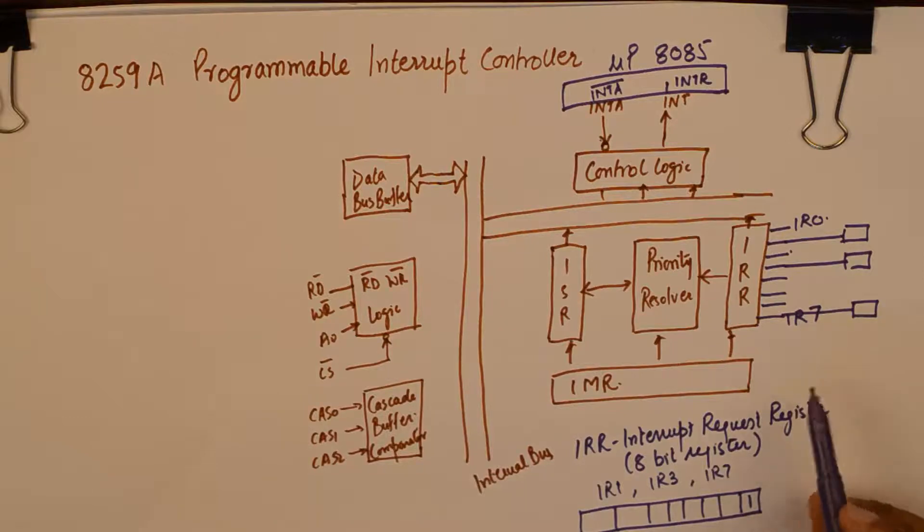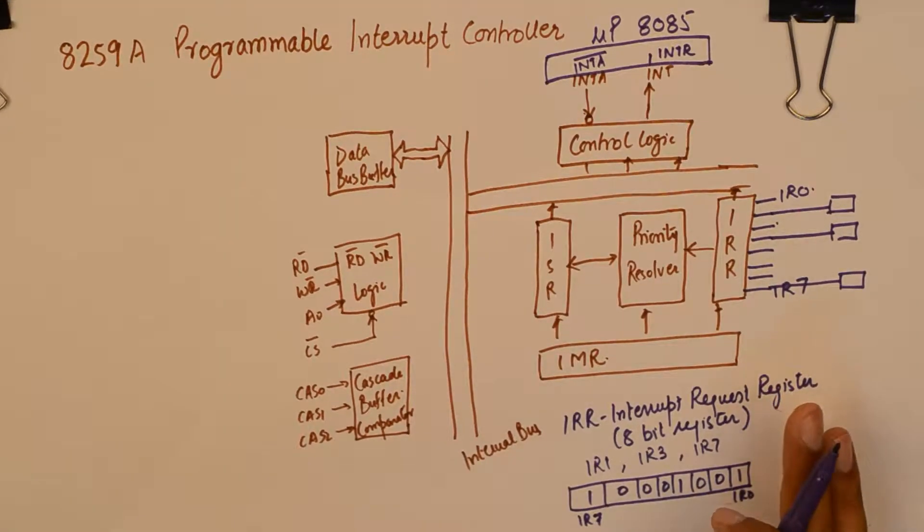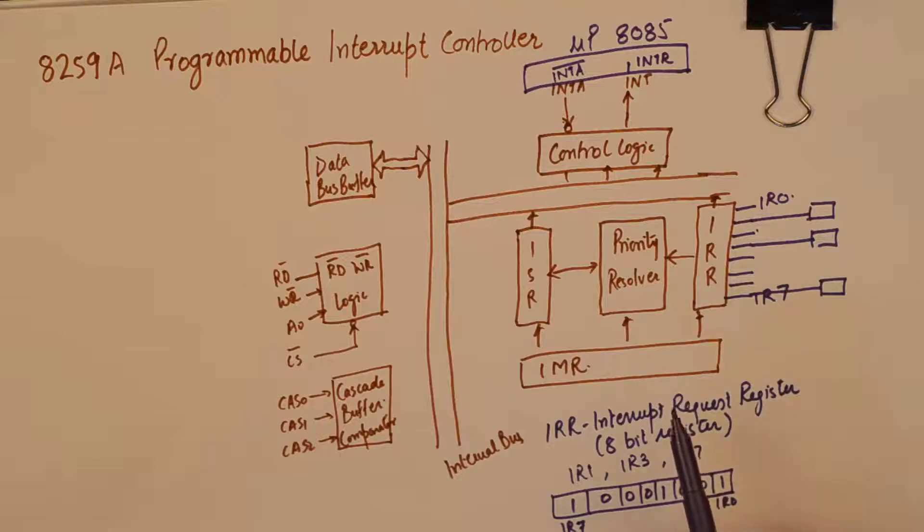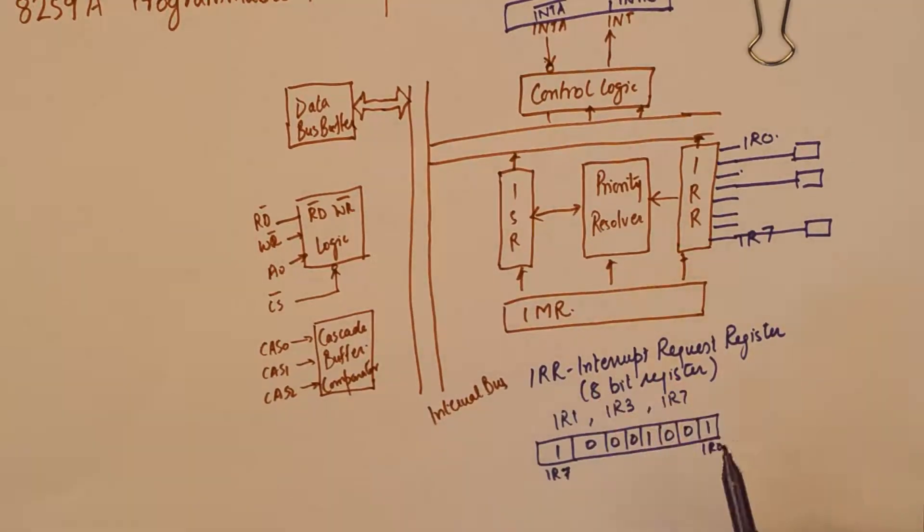So what will happen is the IRR register which is an 8 bit register will store 1 in those bits corresponding to the interrupts registers. So a 1 will be stored on position number 1 which is the bit for IR1 and similarly 1 will be stored here for the position of IR3 and 1 will be stored for the position of IR7.